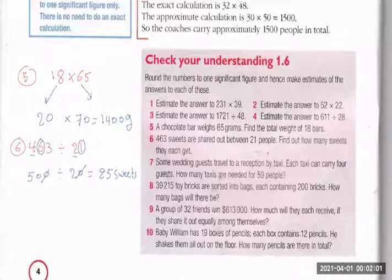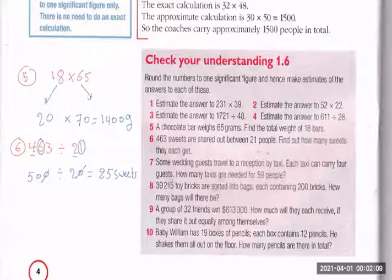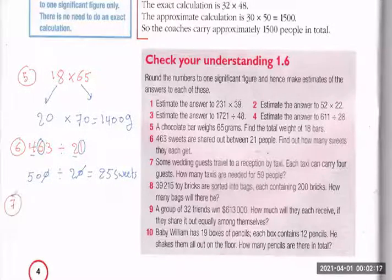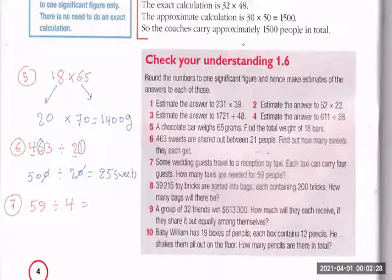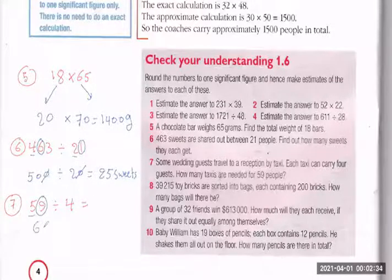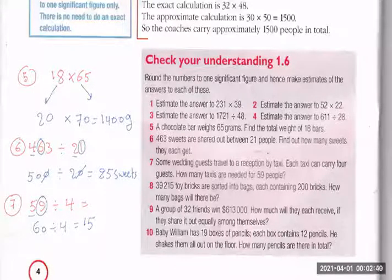Question number seven: Some wedding guests travel to a reception by taxi. Each taxi can carry 4 guests. How many taxis are needed for 59 people? Round 59 to one significant figure — it becomes 60. So 60 divide by 4, which means we need 15 taxis.